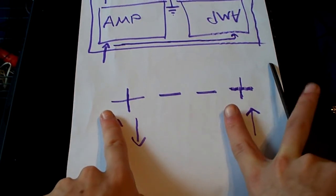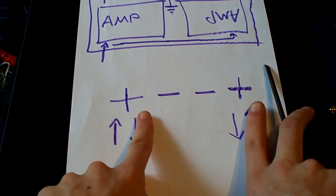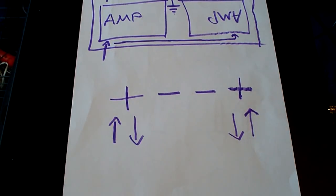Whilst one pushes, the other one pulls. Whilst one pulls, the other one pushes. Like that. So it basically creates double the output.